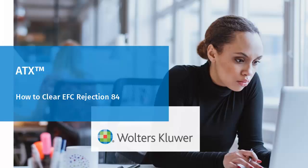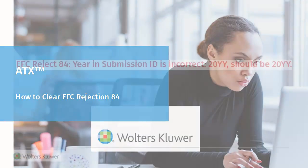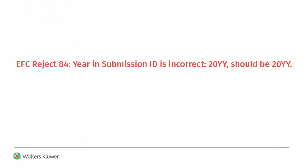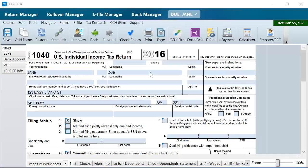Hello, and welcome to the video to learn how to clear EFC Reject Code 84 in ATX. EFC Reject Code 84 states that the year in the submission ID is incorrect, along with the tax year that was submitted and the tax year it should be. To clear the rejection code,